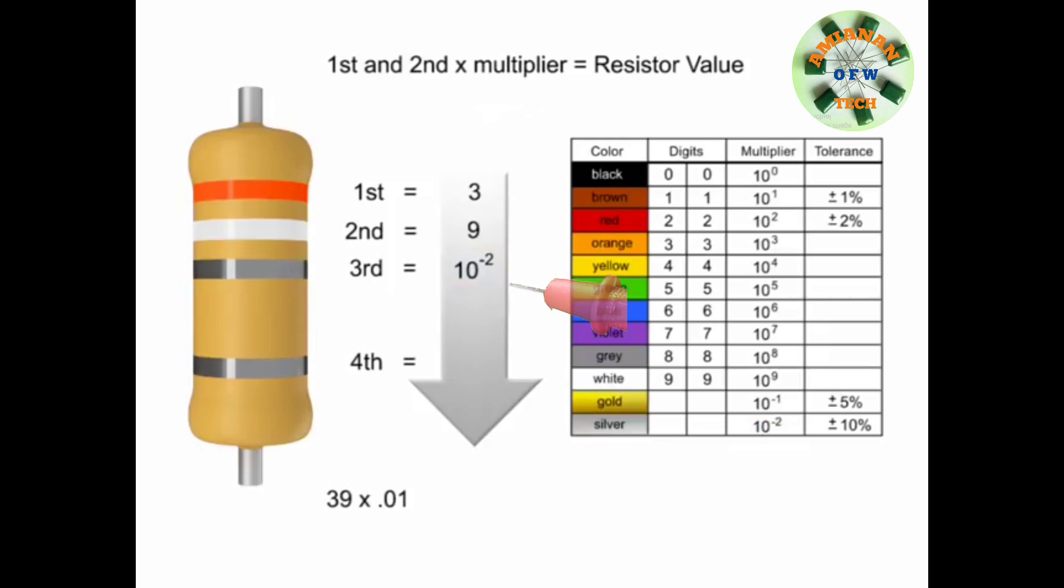In this instance, we would take the 39 and move the decimal point two places to the left, resulting in a value of 0.39 Ohms. Thus, the value of this resistor is 0.39 Ohms with a tolerance of plus or minus 10%.